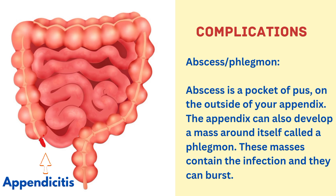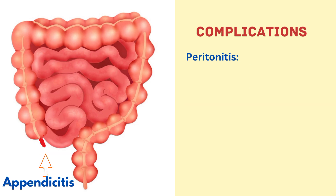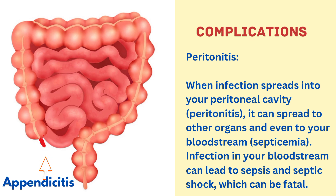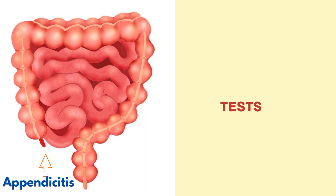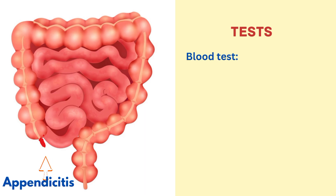When infection spreads into your peritoneal cavity, it is called peritonitis. It can spread to other organs and even to your bloodstream, called septicemia. Infection in your bloodstream can lead to sepsis and septic shock, which can be fatal.